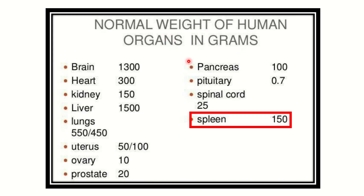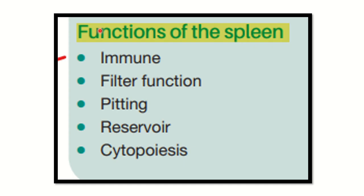The normal weight of the spleen is around 150 grams. For comparison, the brain weighs approximately 1300 grams and the heart about 300 grams, illustrating the different weights of organs in the body.